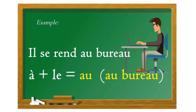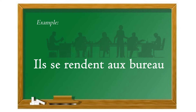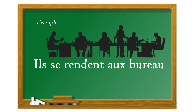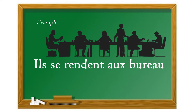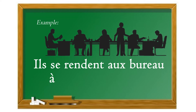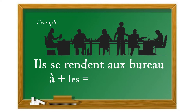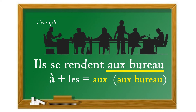Si on met ça au pluriel, ça nous donne : « Ils se rendent aux bureaux », c'est-à-dire plusieurs personnes qui se rendent au bureau. Ce qui est contracté ici, c'est « à » préposition plus « les » article défini au pluriel, et ça nous donne « aux » avec X.